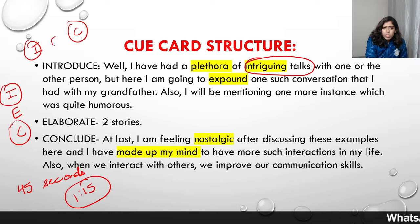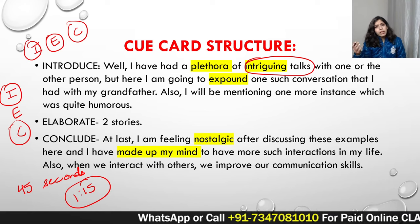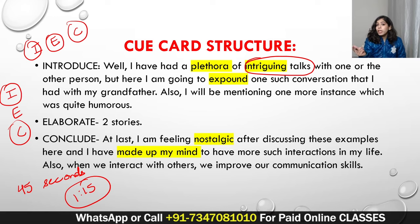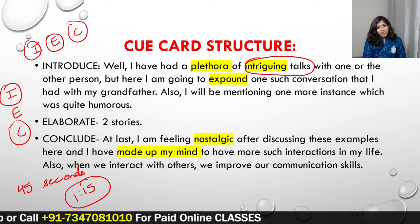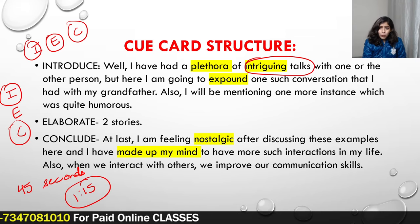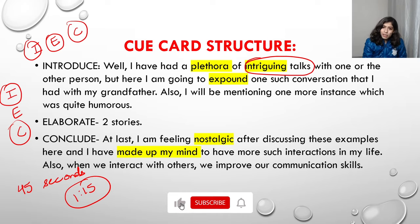I, E, C — the introduction and conclusion have been prepared for you. Just elaborate the two stories a little bit. You can at least say that much. And if you have a grammar problem, start with simple sentences and slowly add complex ones. There's even a rule for that which I'll explain in my next video. That's all for today — I hope you enjoyed this video. Do let me know in the comments and I'll create more videos like this. Bye bye, see you in the next video!